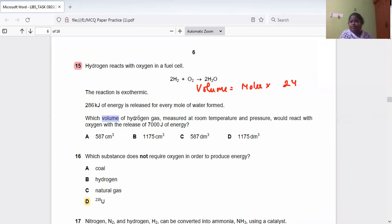Because it is a gas, hydrogen gas, volume of hydrogen gas - so moles times 24. Volume equals moles of that gas times 24. First we have to find the moles.